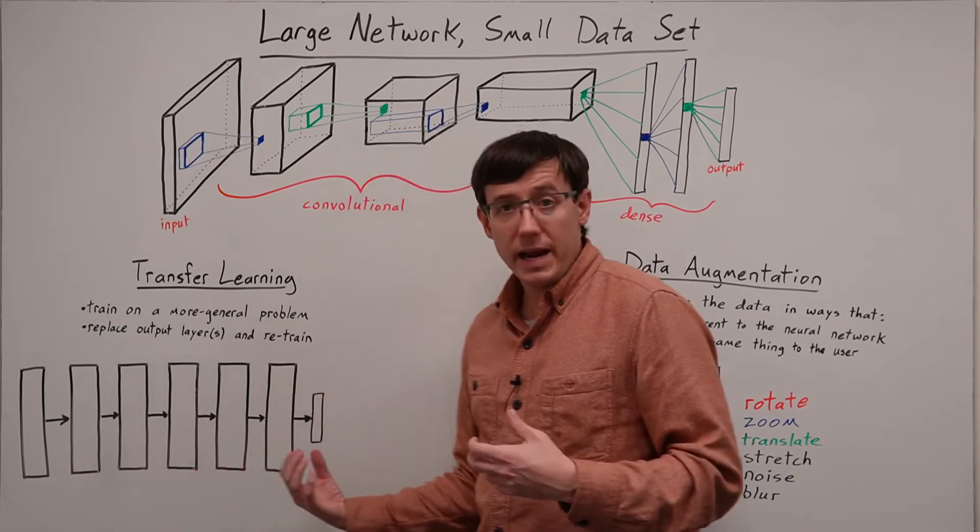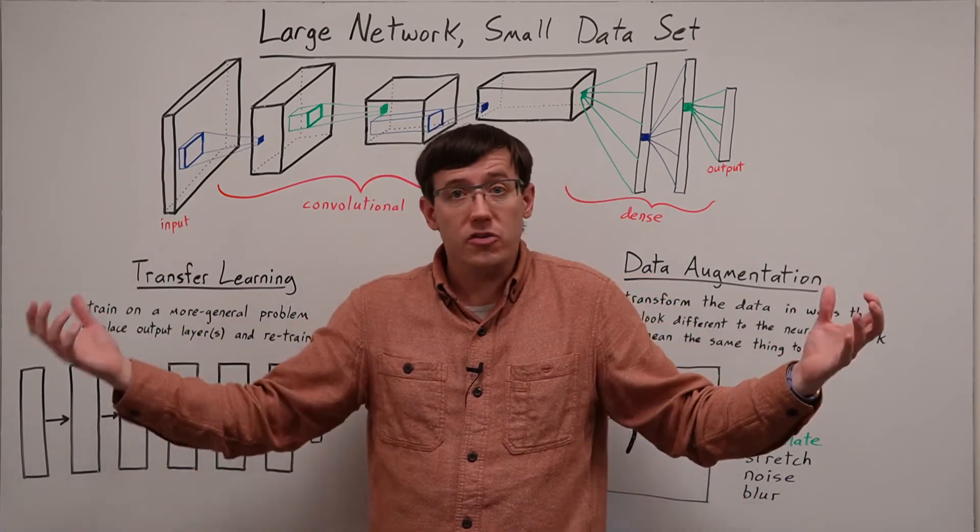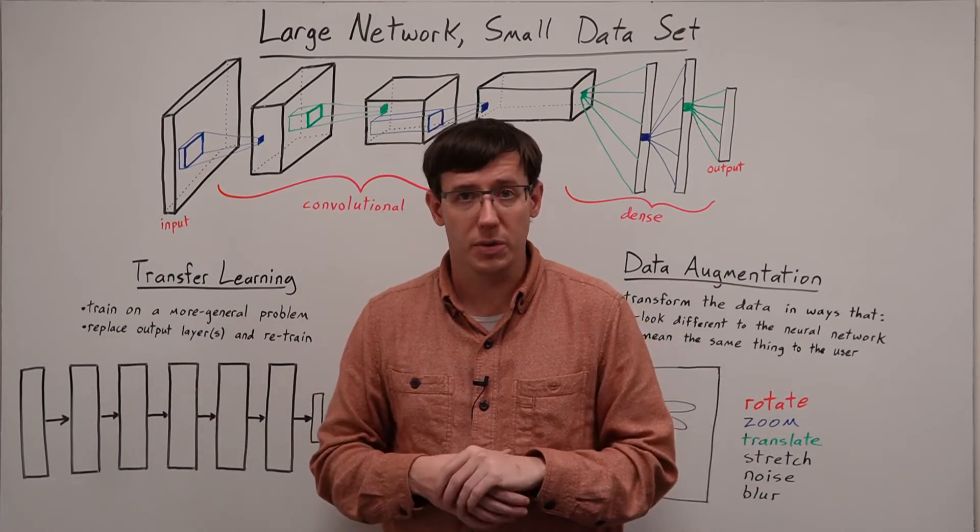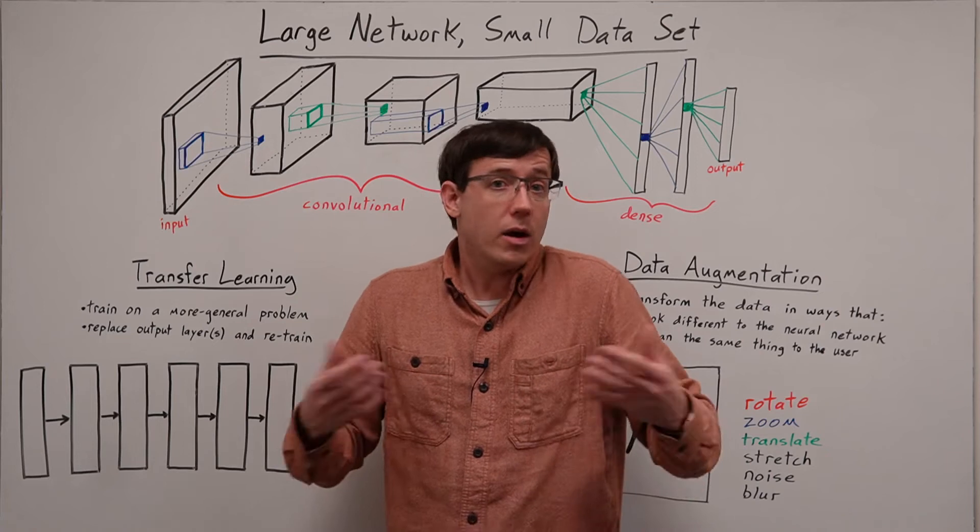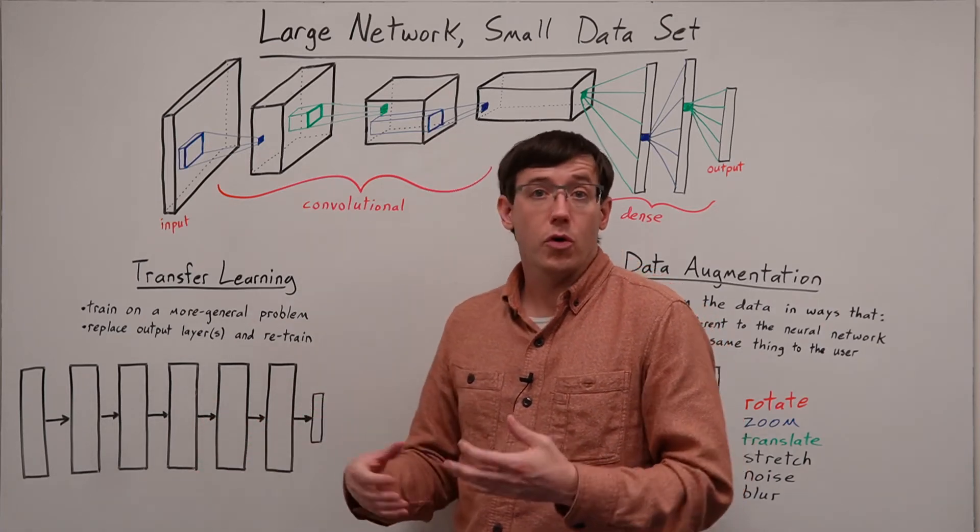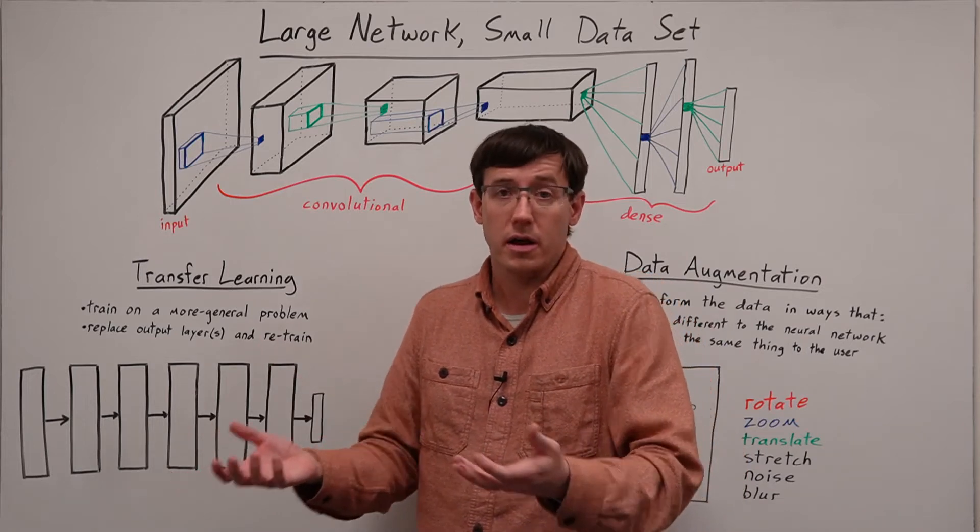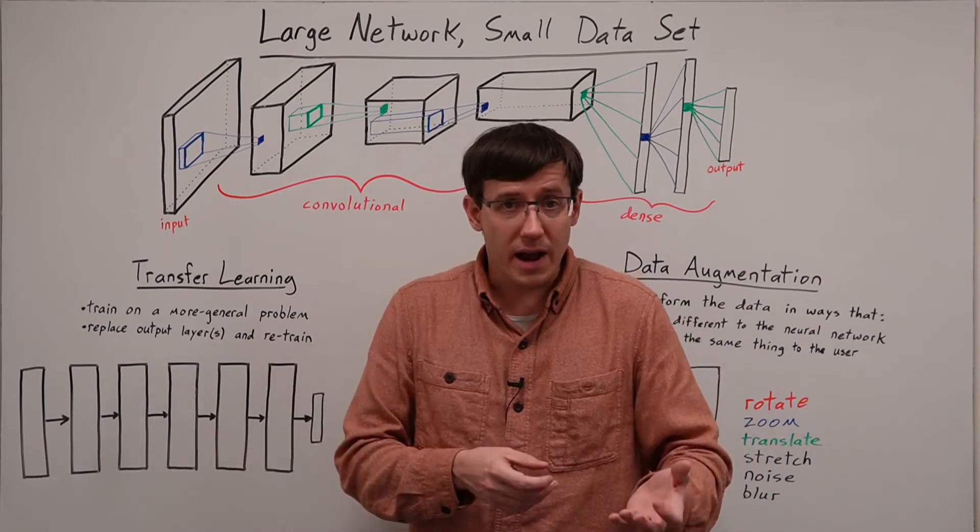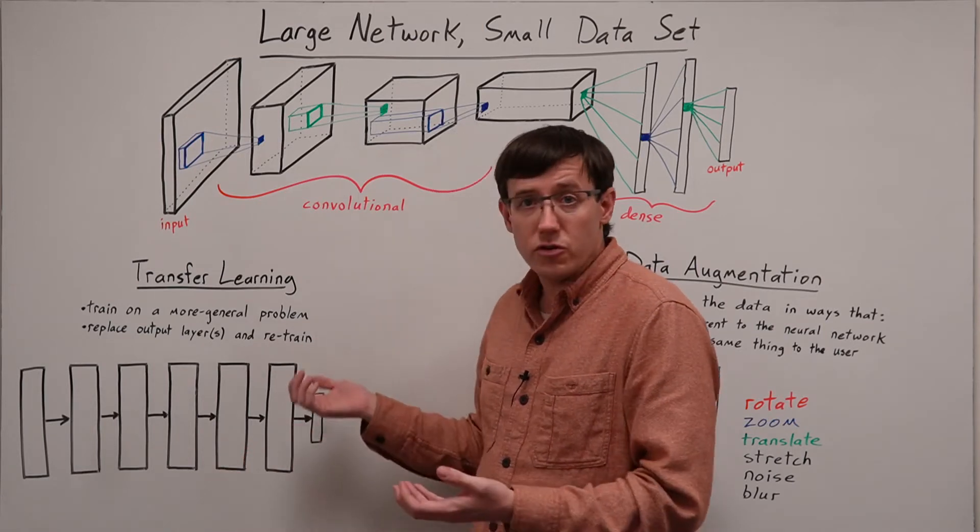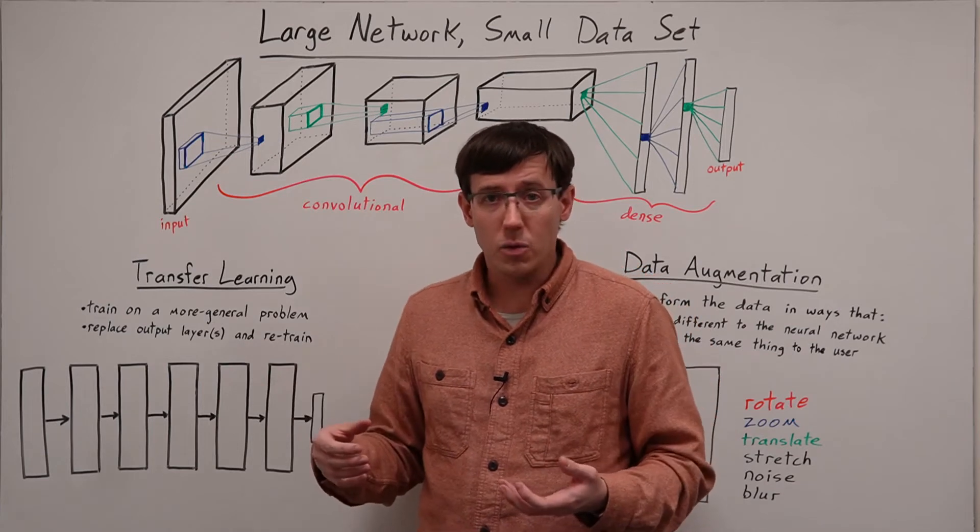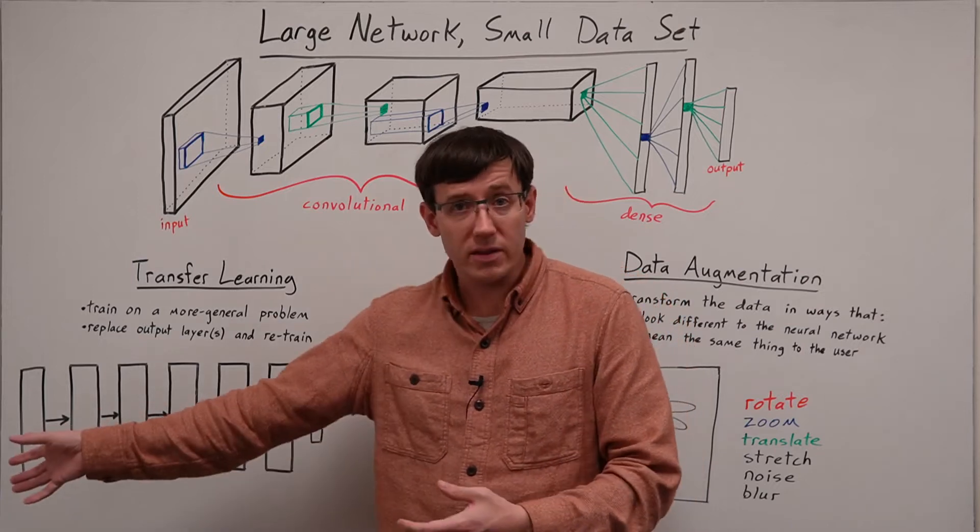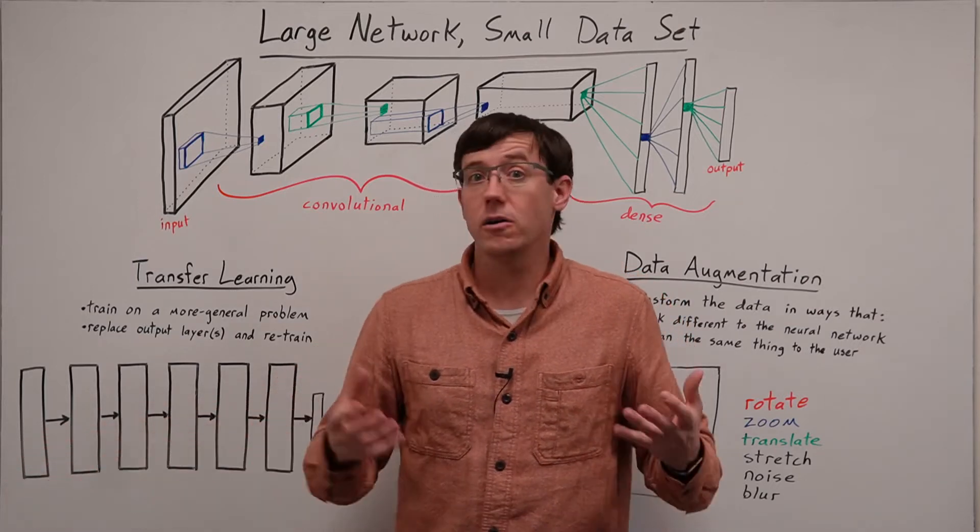In an image processing setting, we could train a network on large image datasets that have been scraped from the web or compiled for various machine learning competitions. And a network trained on those datasets would have a last layer that's used for performing classification on those types of images. So now, if we're doing some other image processing task with a different sort of output layer, we could throw away the outputs of this network, but take the rest of the network and add our own output layer.